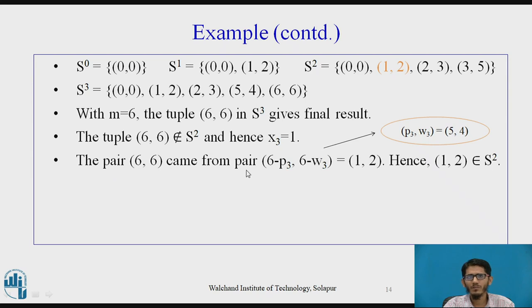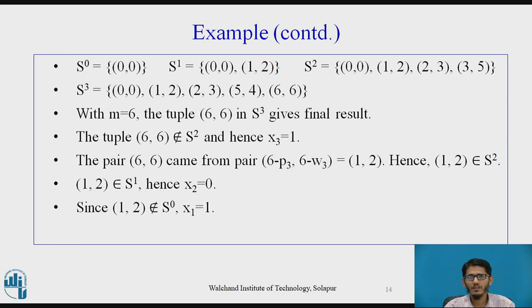The pair (6, 6) came from the pair (6-p3, 6-w3) where p3w3 equal to (5, 4) and this (6-p3, 6-w3) gives (1, 2) and hence (1, 2) should belong to s2. (1, 2) it also belongs to s1. Hence, we conclude that this (1, 2) came from s1 and therefore x2 is equal to 0. That is, the second object is not taken. And since (1, 2) does not belong to s0, we conclude that x1 equal to 1 meaning the first object is selected.